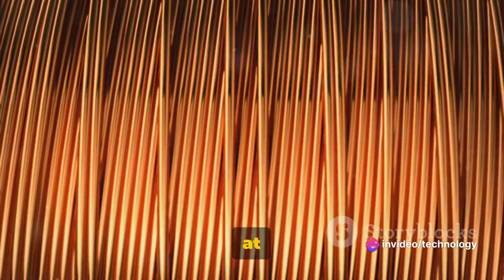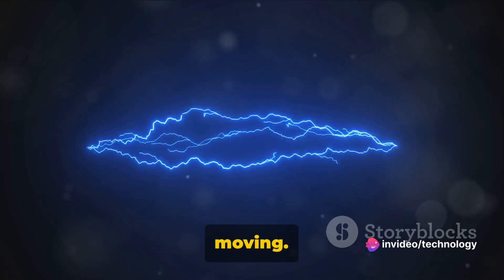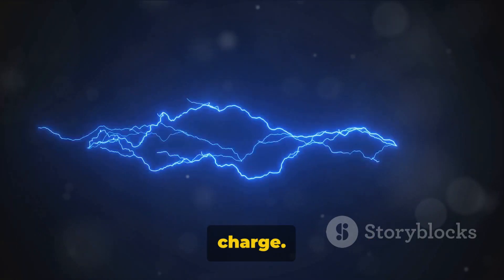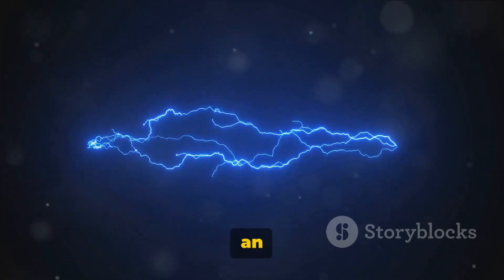Now, imagine a wire. It's packed with atoms, each one hosting a party of electrons. When a voltage is applied at one end of the wire, it's like a signal at the party. The electrons start moving. They shuffle from one atom to the next, creating a flow of charge. This is the essence of an electric current.